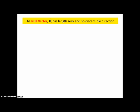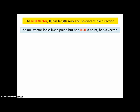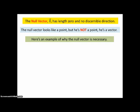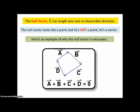Now, the null vector, 0 vector, has a length 0 and no discernible direction, because it's got no length. The null vector looks like a point, but he's not a point. He's a vector. Here's an example of why we need the null vector. Here we have the sum of 4 vectors, which ends up back where you started. So basically, the sum then has no length, because the resultant goes from that point at the beginning of a to the point at the end of d, and that's 0 length. So we do need him to make our algebra of vectors complete.